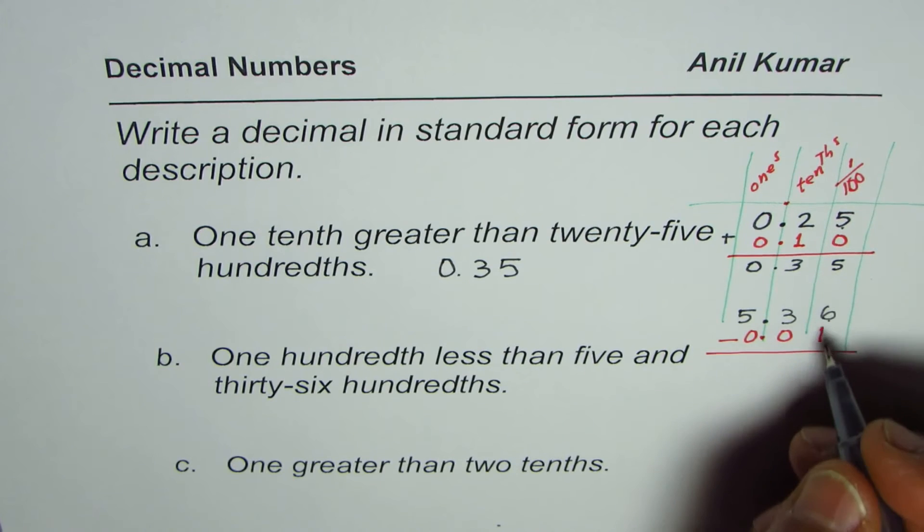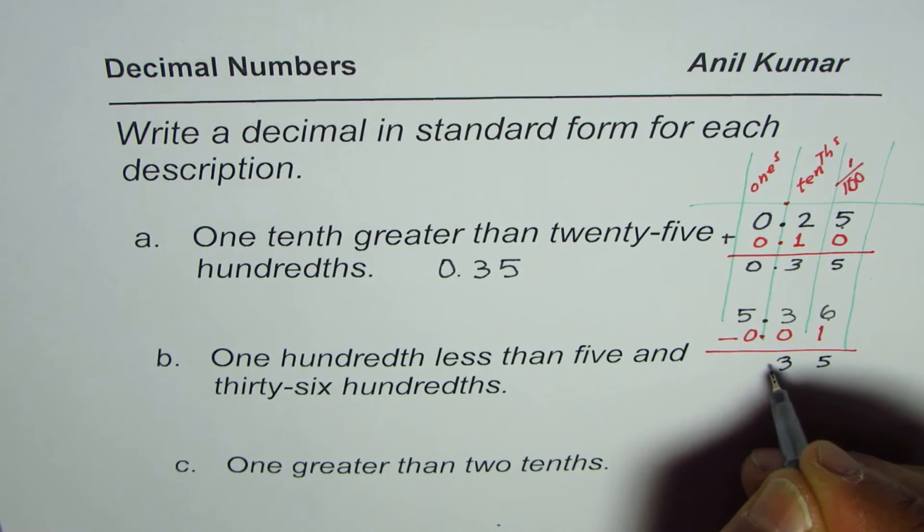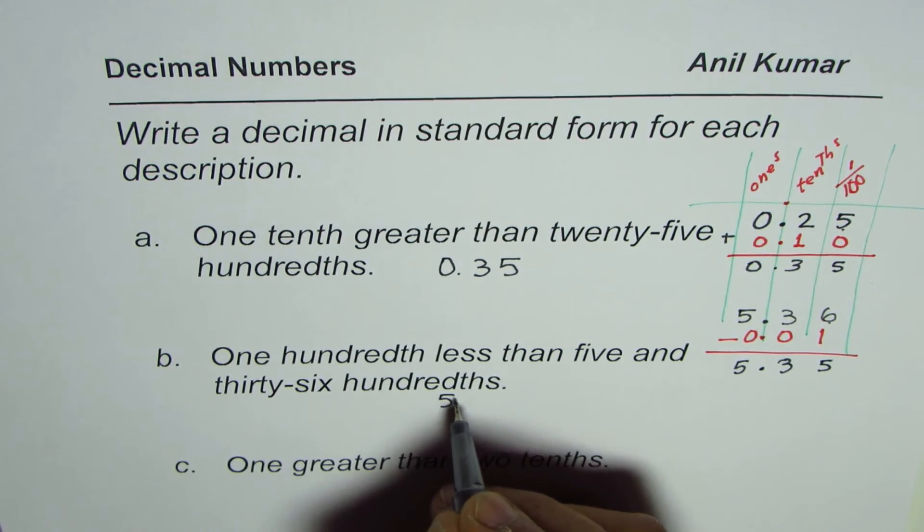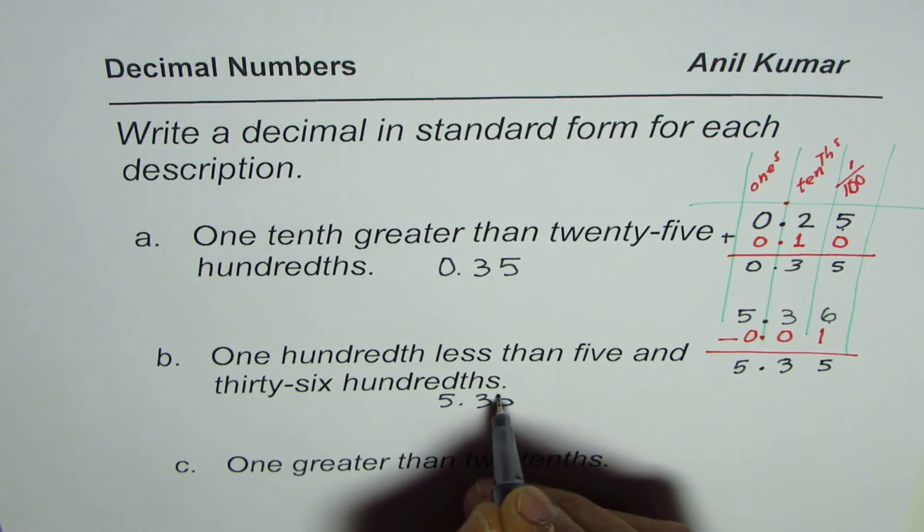So six take away one is five. Three take away zero is three. Decimal five. So we get our answer as 5.35.